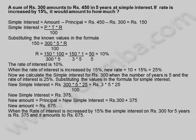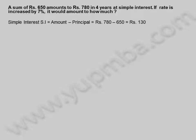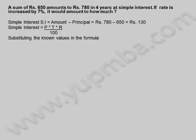Let us see another example. A sum of 650 rupees amounts to 780 rupees in 4 years at simple interest. If the rate is increased by 7%, it would amount to how much? Simple interest equals 780 minus 650, equal to 130 rupees. Simple interest equals principal into time into rate of interest divided by 100. Substituting: 130 equals 650 into 4 into rate divided by 100.